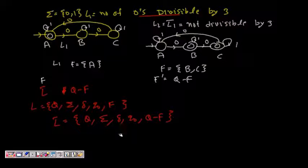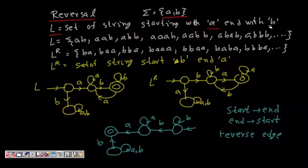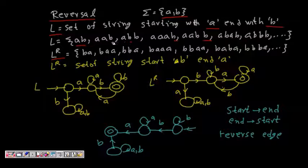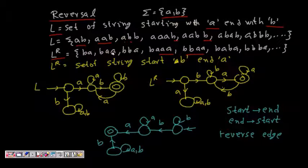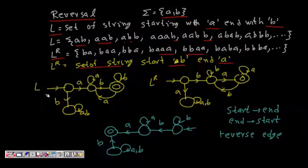Now let's look at the reversal of a language. If L is the set of strings over Sigma = {a, b} starting with 'a' and ending with 'b', the smallest such string is 'ab', and others include 'aab', 'abb', 'aabab', and so on. Reversing these strings gives 'ba', 'baa', 'bba', 'babaa', and so on — all starting with 'b' and ending with 'a'. So L-reverse is the set of strings starting with 'b' and ending with 'a'.